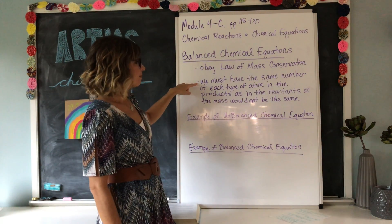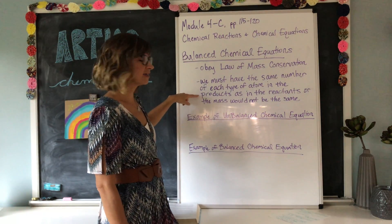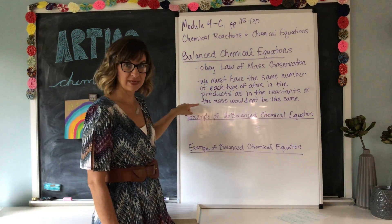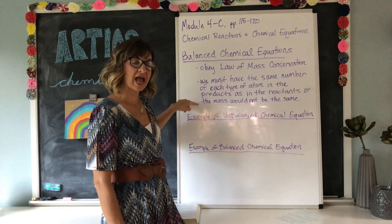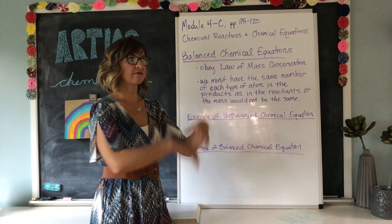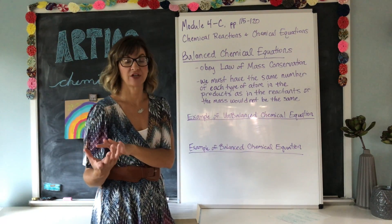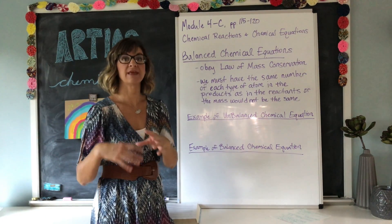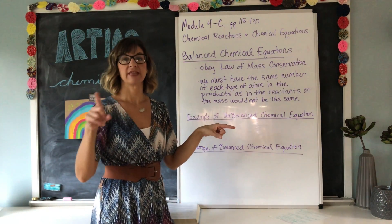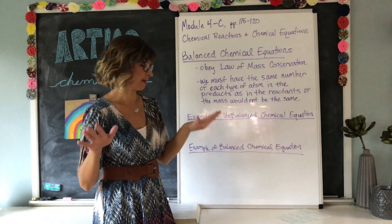We must have the same number of each type of atom in the products as in the reactants, or the mass would not be the same. When we're talking about having a balanced chemical equation, we are going to see the same number of nitrogen atoms before as we see after the chemical change occurs. They may be mixed around in different molecules, but if we were to count them up on one side, they'd be the same as they end up with on the other side — balanced chemical equations.